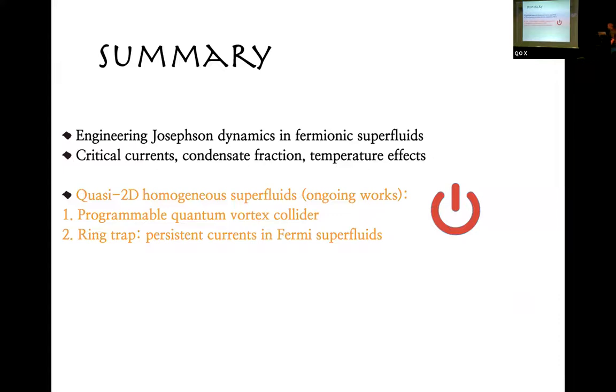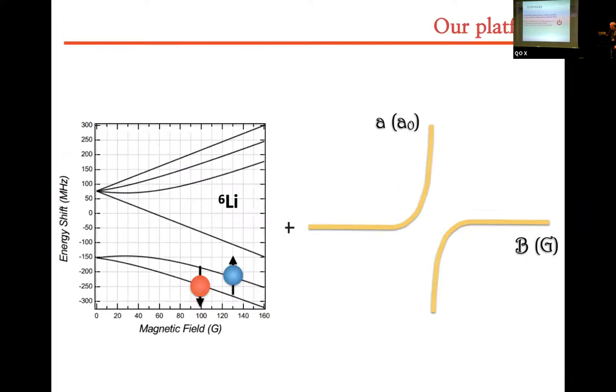I want to share this with the students. Sometimes it is good that students go against the supervisor, because in this case, Josephson was really stopped by Bardeen, that would say it was absolutely impossible that pairing could extend in the barrier, so no supercurrent should happen in this kind of system. So this is a summary. I will tell you how we can engineer a Josephson junction and study DC Josephson effect, showing critical currents, condensate fraction, and temperature effects. And if I have time, I will tell you about two-dimensional homogeneous Fermi systems.